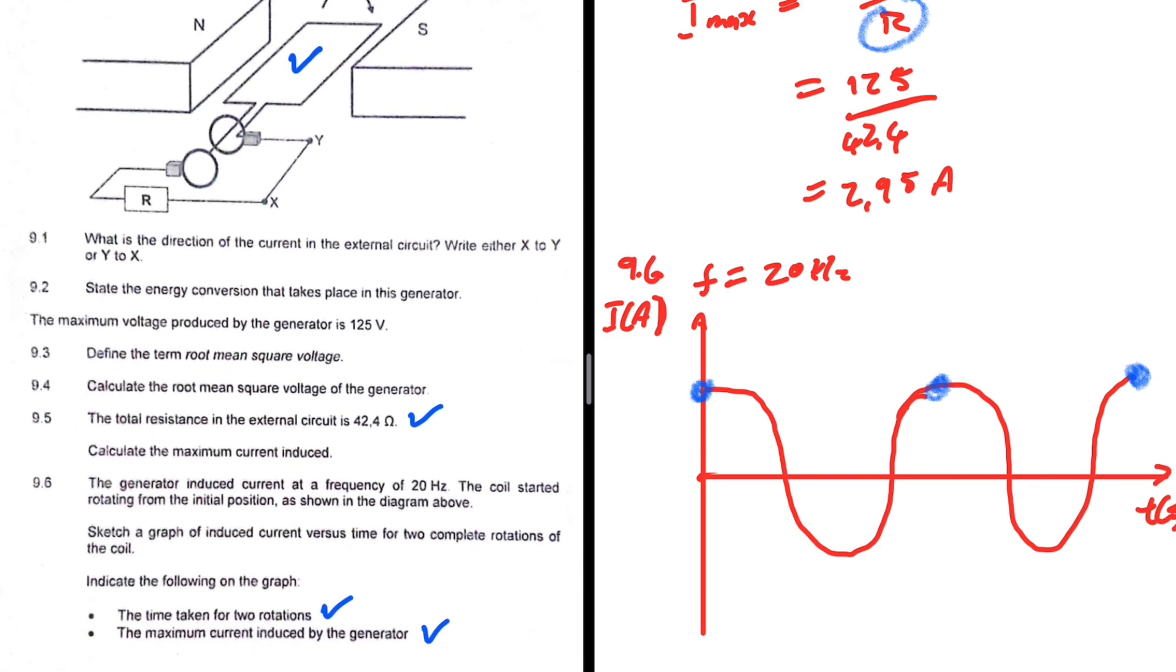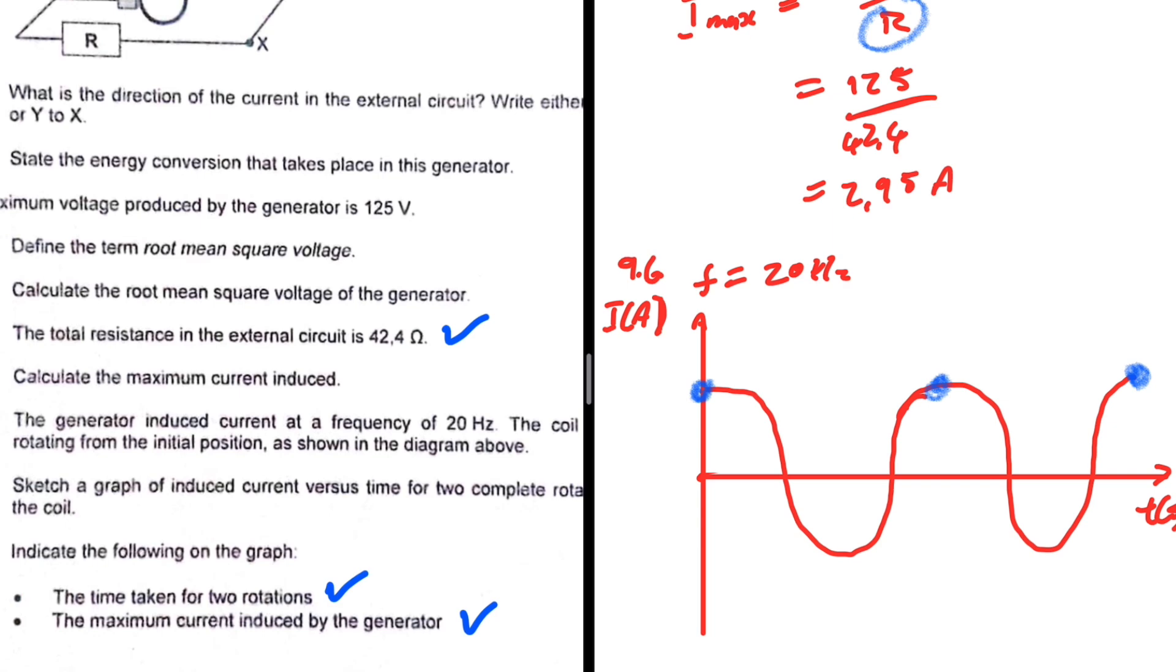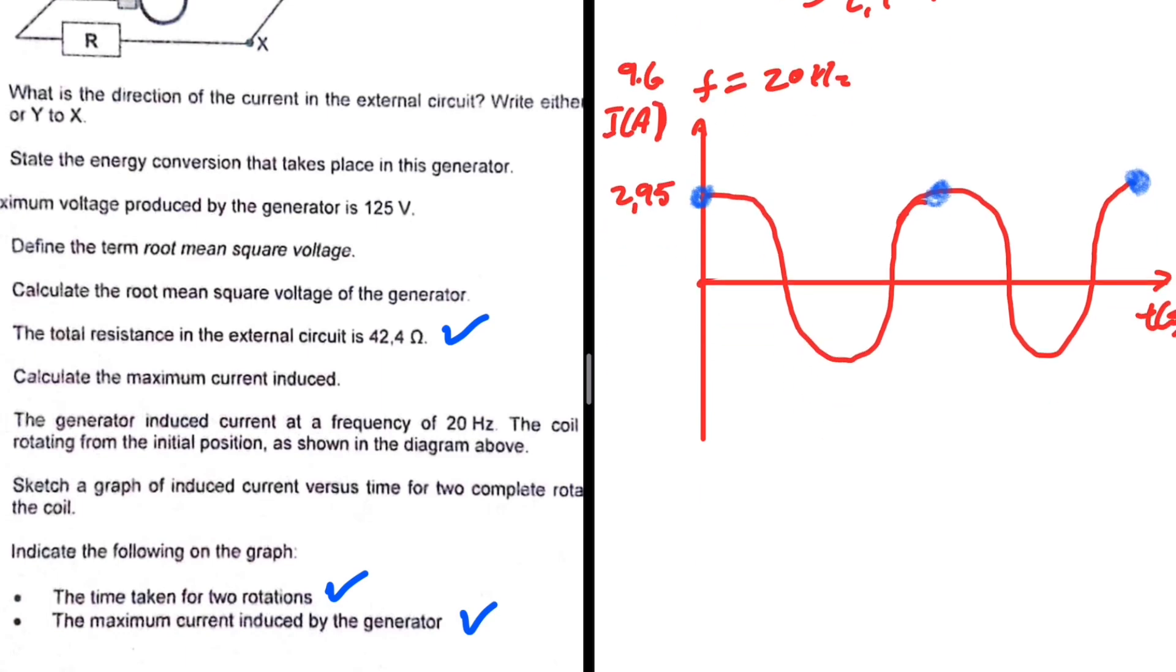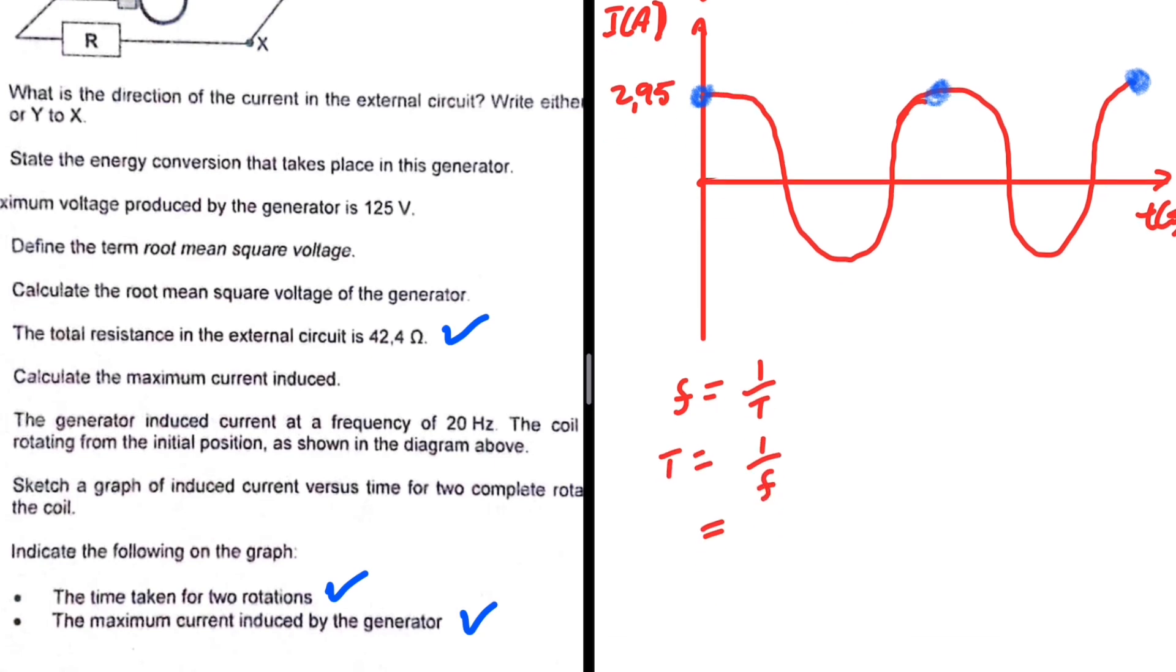We need to indicate a couple of things: time taken for the two rotations and the maximum current. Let's start with the maximum current: 2.95. Now let's come to the time. We're given the frequency, which is 20 hertz, but we know that with the frequency we can find the period. So what is 1 over 20?